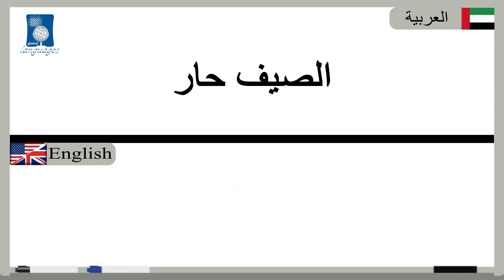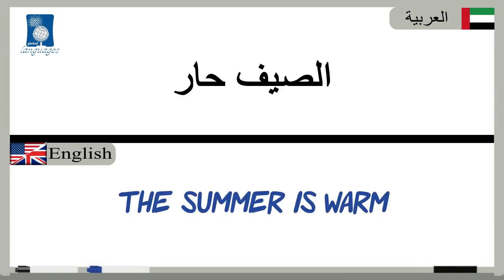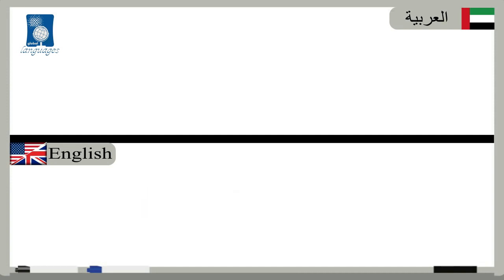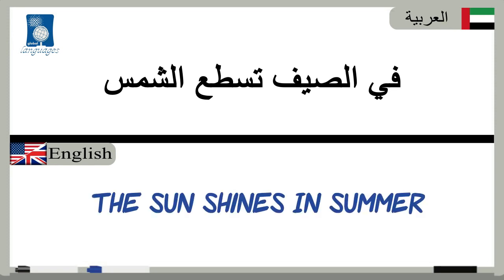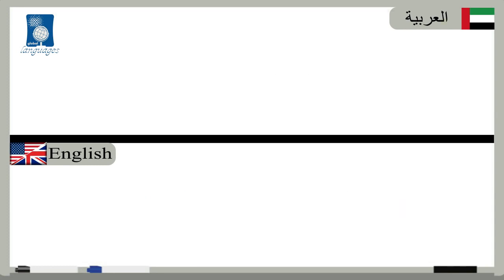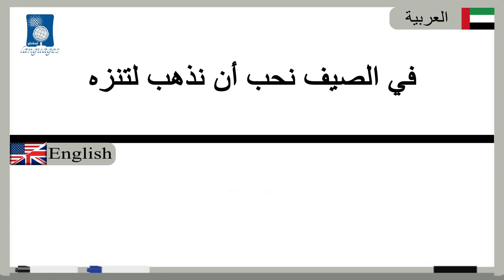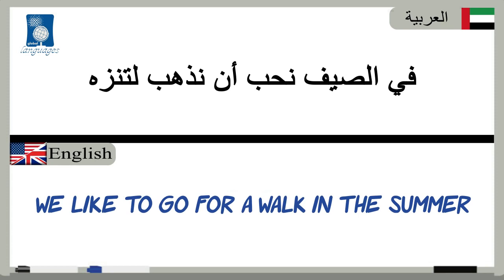الصيف حر — The summer is warm. في الصيف تسطع الشمس — The sun shines in summer. في الصيف نحب أن نذهب للتنزه — We like to go for a walk in summer.